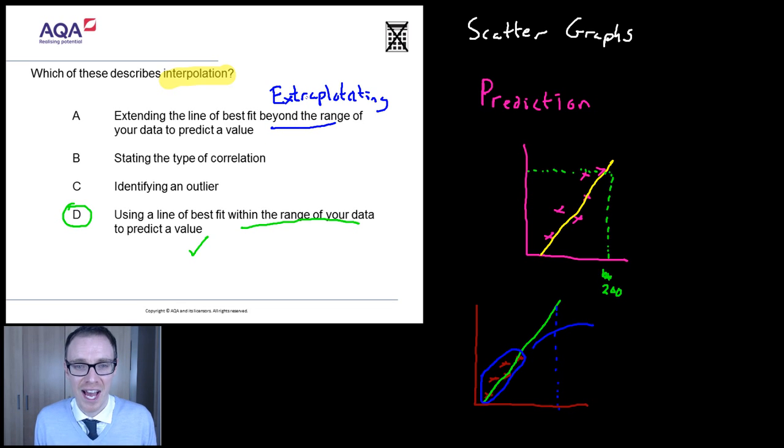And that is the answer that's tempting a lot of students. So, I just wanted to emphasize that. It's a different skill with scatter diagrams. When you use the line of best fit outside of the range of data, you're extrapolating.